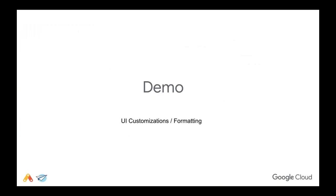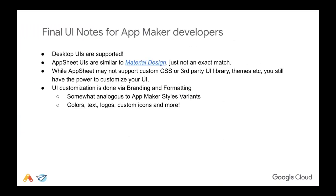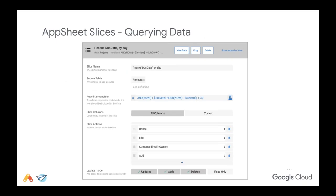Just to stress: although AppSheet is mobile first, it is also desktop friendly. There's a dashboard widget that you can throw other children views into. It's material design — not an exact match but it still falls into the same look and feel for the most part. You don't have to worry about CSS, and you don't have the ability to work with third-party UI libraries and themes, but you have a pretty good degree of flexibility with the formatting and brand features. Let's switch gears and talk about querying data.